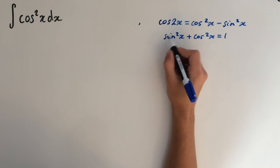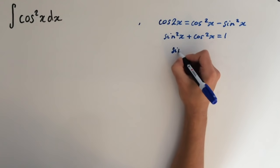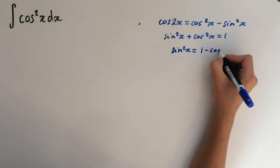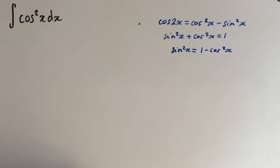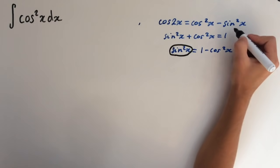So we want to substitute sine squared of x into this identity. So rearrange for sine squared of x. This gives us 1 minus cosine squared of x, and we want to substitute this expression.